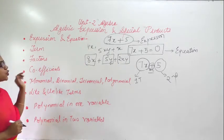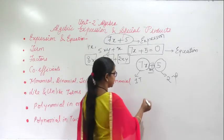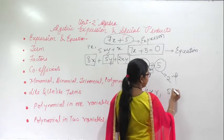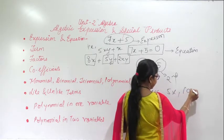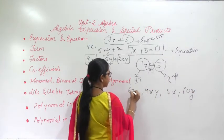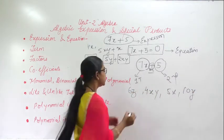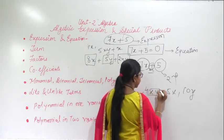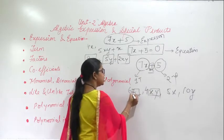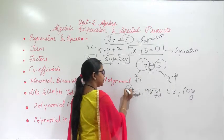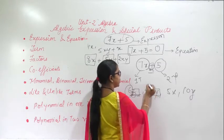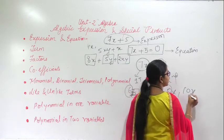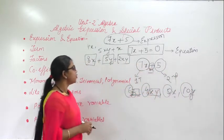Now the next concept is coefficient. Coefficient means the numerical part of a term. For example, in 4x the coefficient of x is 4, in 5x the coefficient of x is 5, in 10y the coefficient of y is 10, and in 6z the coefficient of z is 6.